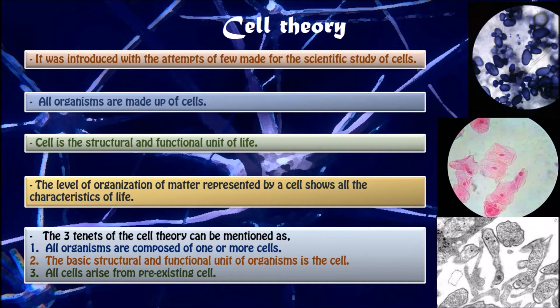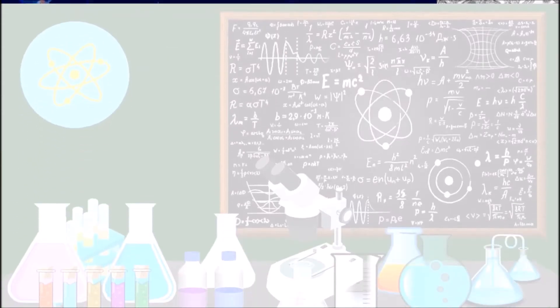The three tenets of cell theory are: first, all organisms are composed of one or more cells; second, the basic structural and functional unit of organisms is the cell; and third, all cells arise from pre-existing cells. Now let us see how scientists contributed to the discovery of cell theory.